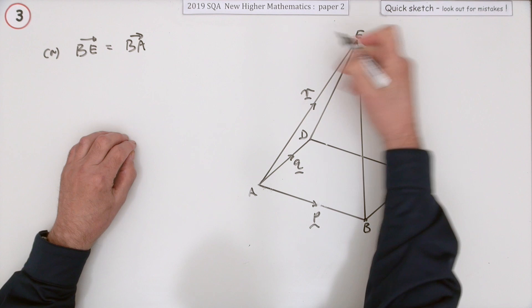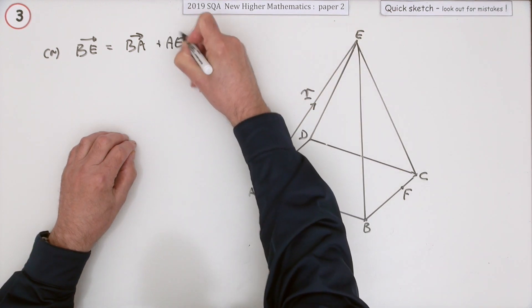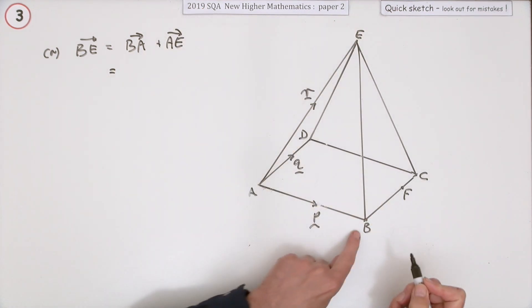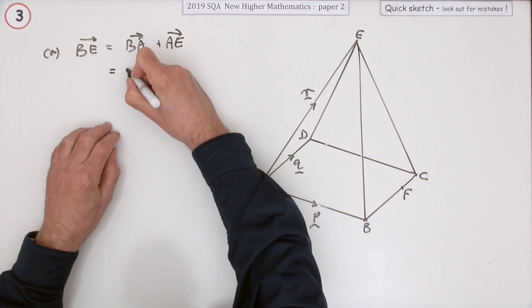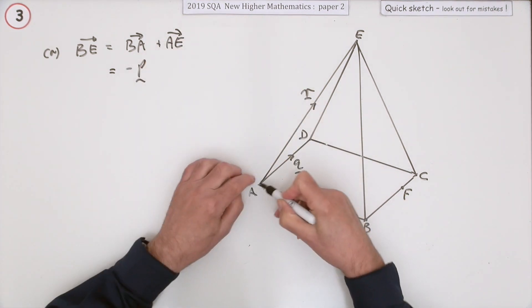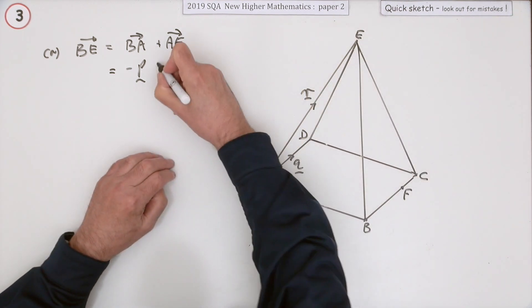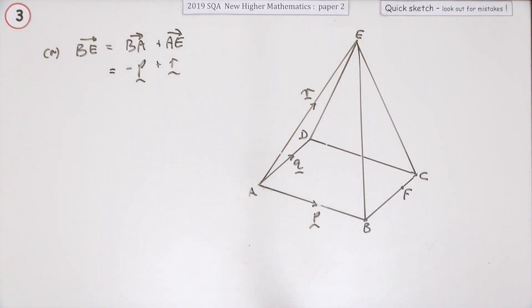And then go from A to E. Going from B to A is against the grain of that vector, so it's going to be negative P. But then you're going with vector R for that part, so that'll be the answer to the first part.